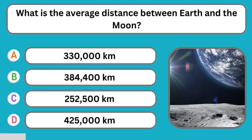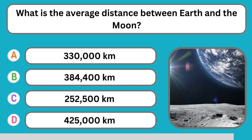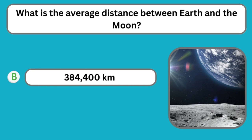Question number twenty-nine: What is the average distance between Earth and the moon? The correct answer is 384,400 km.